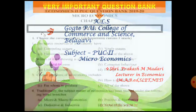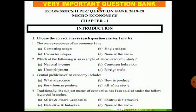The first part is 'Choose the Correct Answer.' Question one: the scarce resources of any economy — four options are given. The scarce resources of any economy have competing usages, single usages, unlimited usages, or none of them. As you know, human wants are unlimited and resources to fulfill these human wants are limited, so the correct answer is option A: competing usages.